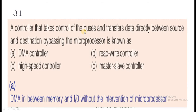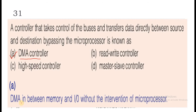Question 31: A controller that takes control of the buses and transfers data directly between source and destination bypassing the microprocessor is known as DMA — Direct Memory Access controller. DMA transfers data directly between memory and I/O without the intervention of the microprocessor. What DMA does is halt the processor for some time for the transfer of instructions and data.